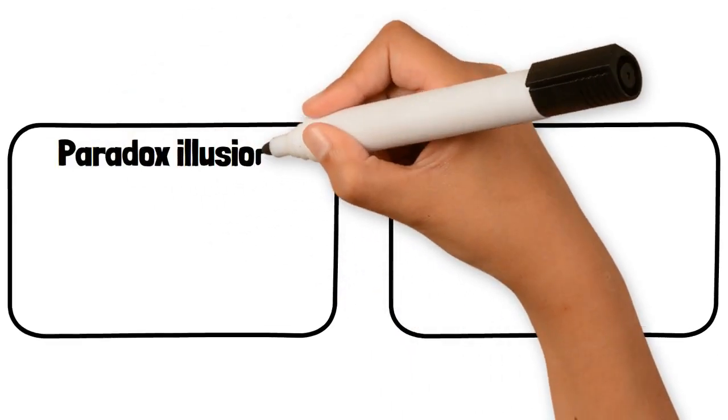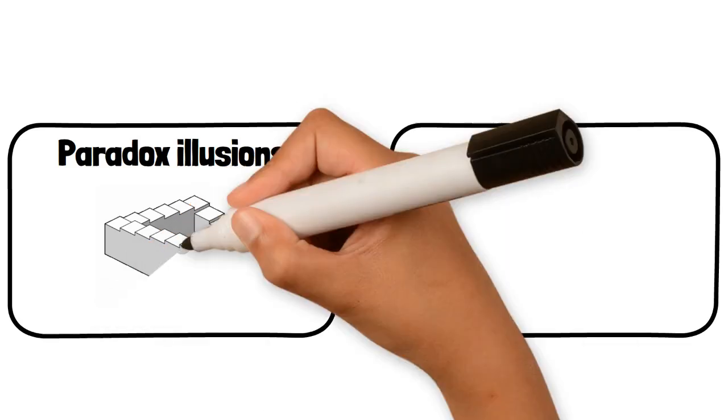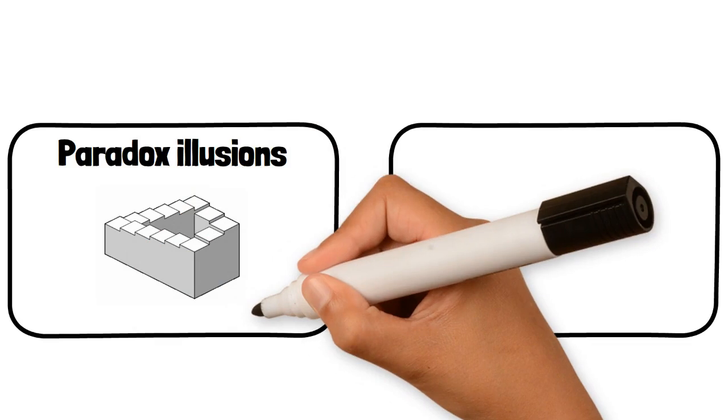Paradox Illusions: These are images that are impossible or contradictory, such as Penrose Stairs, which appear to ascend or descend endlessly in a loop, defying the laws of physics.